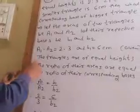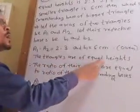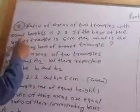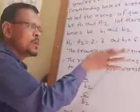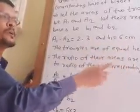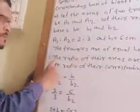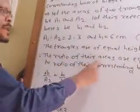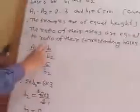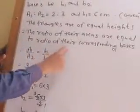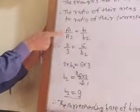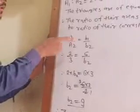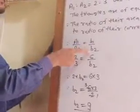The triangles are of equal height — that is given. If equal height, then ratio of their areas is equal to ratio of their corresponding bases. So therefore, the ratio of their areas equals ratio of their corresponding bases. Therefore A1 upon A2 equals B1 upon B2.